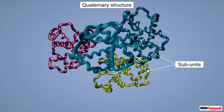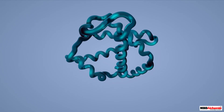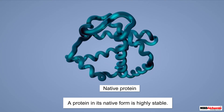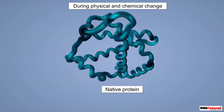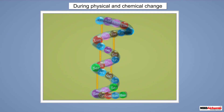Proteins are specific in their structure as well as in their biological activity. The natural state in which a protein occurs is its native state, and a protein in its native state is called a native protein. A native protein is highly stable.